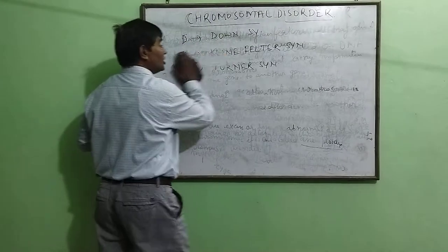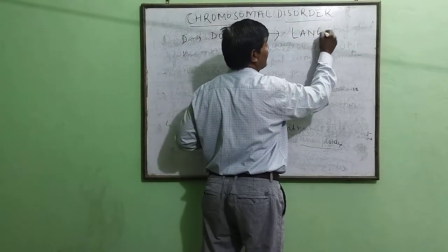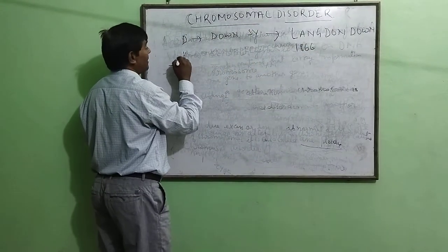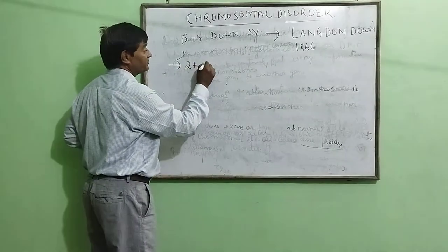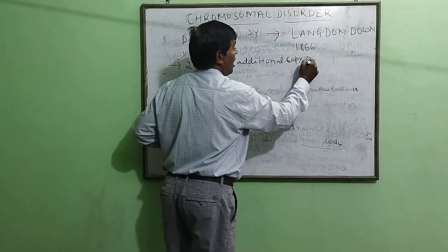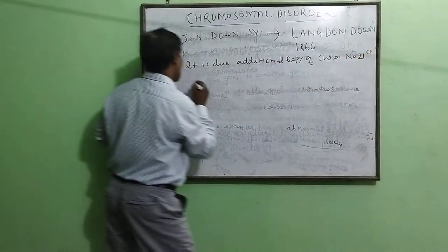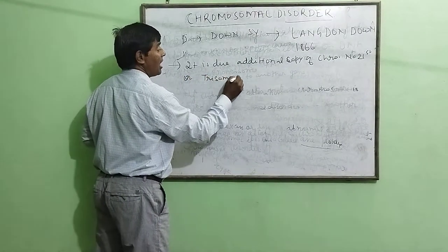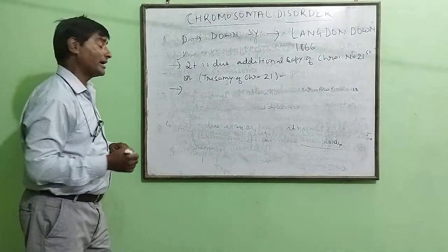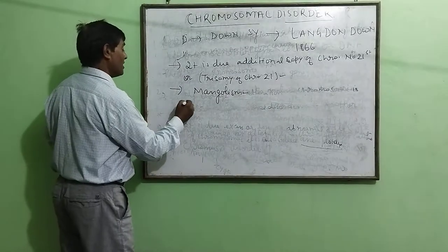Now let us see Down Syndrome. This syndrome was first discovered by the scientist Langdon Down in 1866. It is due to an additional copy of chromosome number 21, also called trisomy of chromosome 21. This disease is also commonly known as Mongolism.